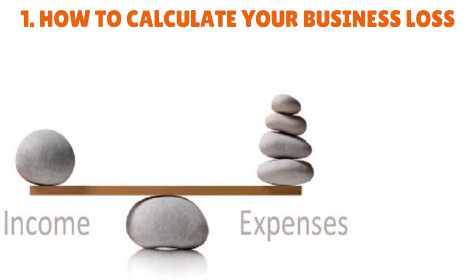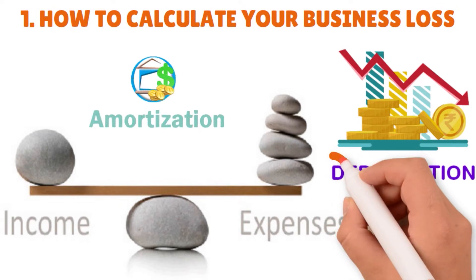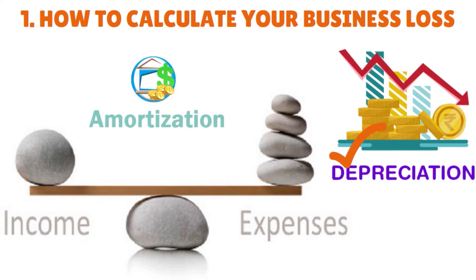There are some accounting items like depreciation and amortization to consider. Depreciation is when you divvy up the cost of capital equipment — a capital asset — over several years, called the useful life of the asset. The accounting treatment that the IRS has versus what basic accounting standards have creates a difference, which is why you have a deferred tax asset or liability. Amortization is essentially the depreciation of intangible assets, such as patents, copyrights, and other IP assets.